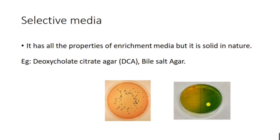Selective medium enhances the growth of selective pathogens — similar to enrichment medium — but it is solid in nature. It has all the properties of enrichment medium but is solid. Examples of selective media are deoxycholate citrate agar for the growth of stool organisms, and thiosulfate citrate bile salt sucrose agar (TCBS), which is used for Vibrio cholerae. In this medium, if the stool sample contains Vibrio cholerae, only that organism will grow, suppressing all other bacteria.